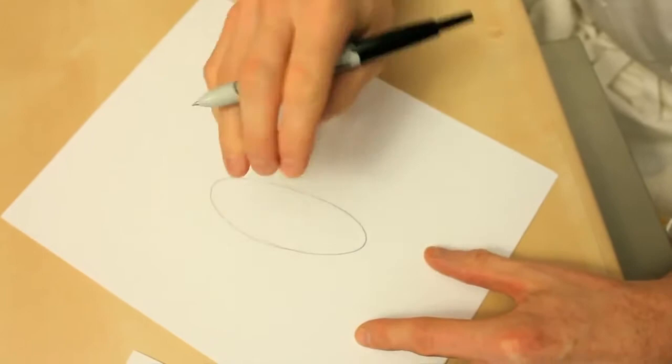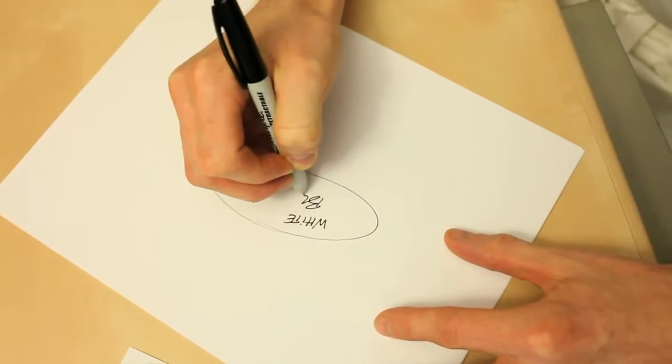Basically, the way this works is if you have your focal ingredient in the middle, let's say it's white beans, you're trying to build a dish around that.